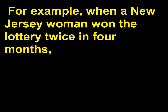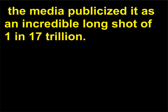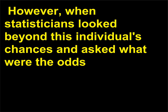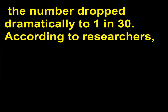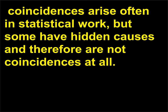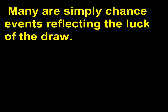For example, when a New Jersey woman won the lottery twice in four months, the media publicized it as an incredible long shot of one in 17 trillion. However, when statisticians looked beyond this individual's chances and asked what were the odds of the same happening to any person buying a lottery ticket in the United States over a six-month period, the number dropped dramatically to one in 30. Coincidences arise often in statistical work, but some have hidden causes and therefore are not coincidences at all; many are simply chance events reflecting the luck of the draw.